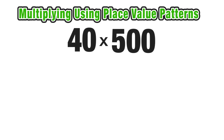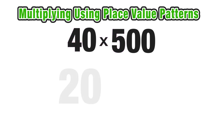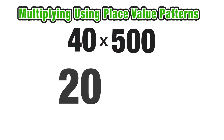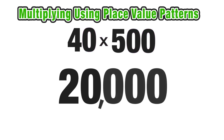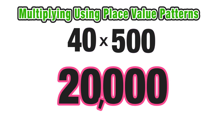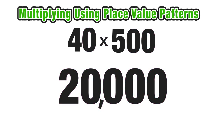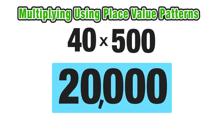Let's keep using this trick. Now let's find the product of 40 and 500. Again, multiply the two non-zero digits together — 4 times 5 is 20. And now we have three zero digits left over, so we take those three and tack them onto the product we just found. Our answer is 20,000.